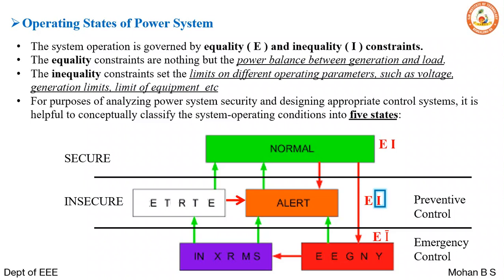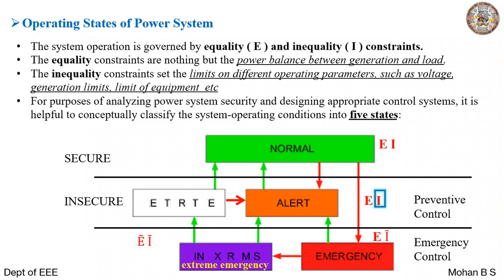From the emergency state, if we move to the next stage, it is called extreme emergency. Here both equality and inequality constraints are not satisfied — there is imbalance between generation and load, and various operating parameters such as voltage and frequency are not met. If emergency control actions are not taken, the system will move to blackout, which is a complete shutdown of the interconnected power system.